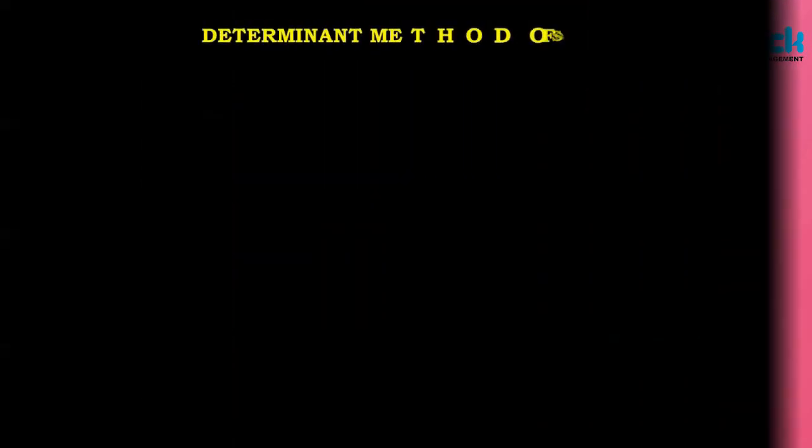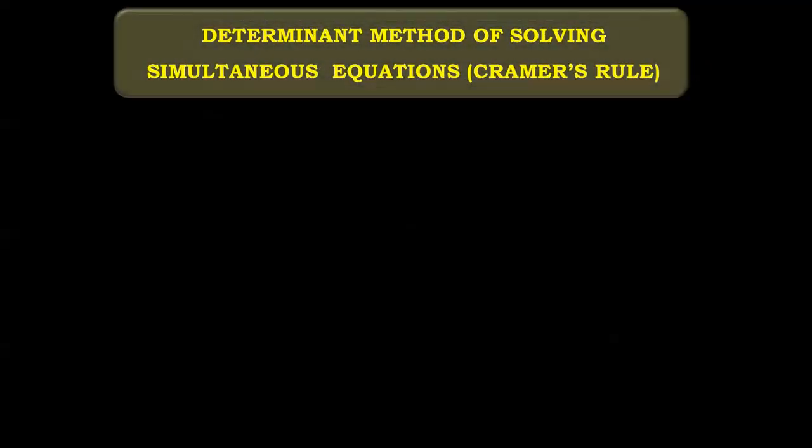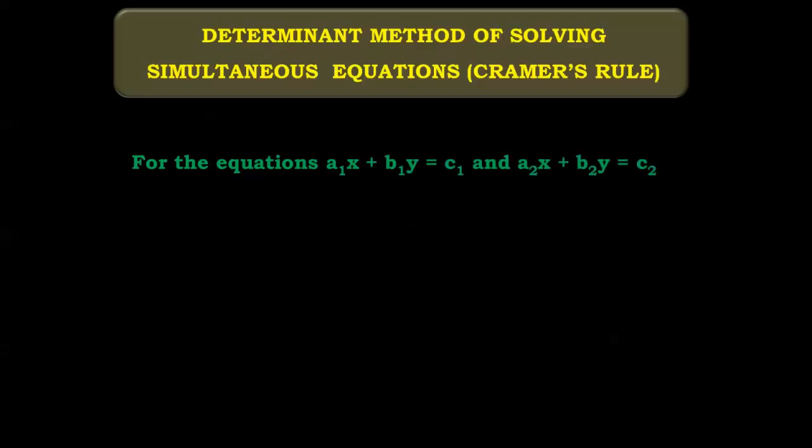Now we will start with the determinant method of solving simultaneous equations, that is Cramer's Rule. For this method, for the equations a1x + b1y = c1 and a2x + b2y = c2, when you have to solve simultaneous equations with the determinant method, you have to write the equation in general form — that is, constant on the right-hand side and both variables on the left-hand side: ax + by = c.